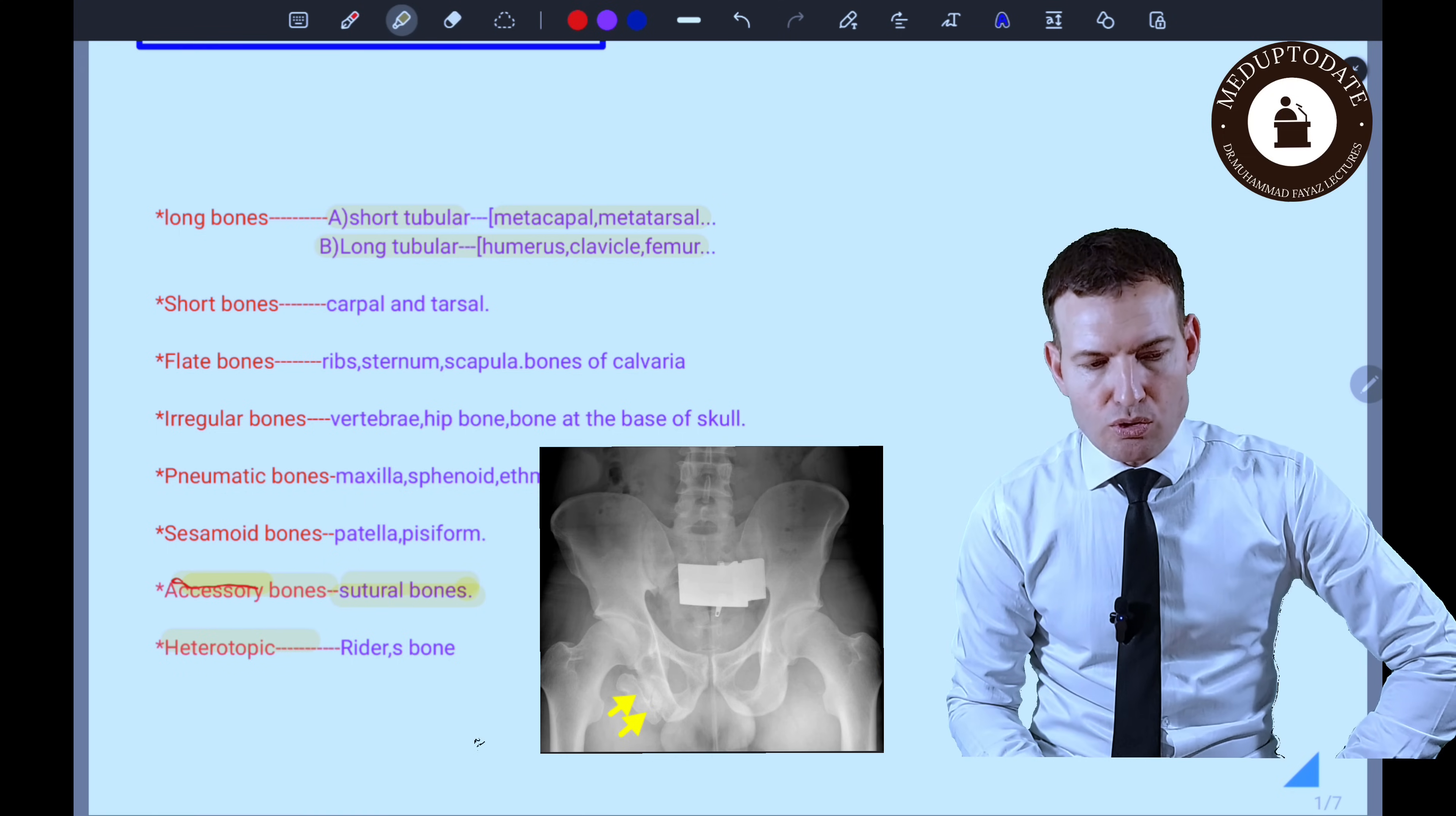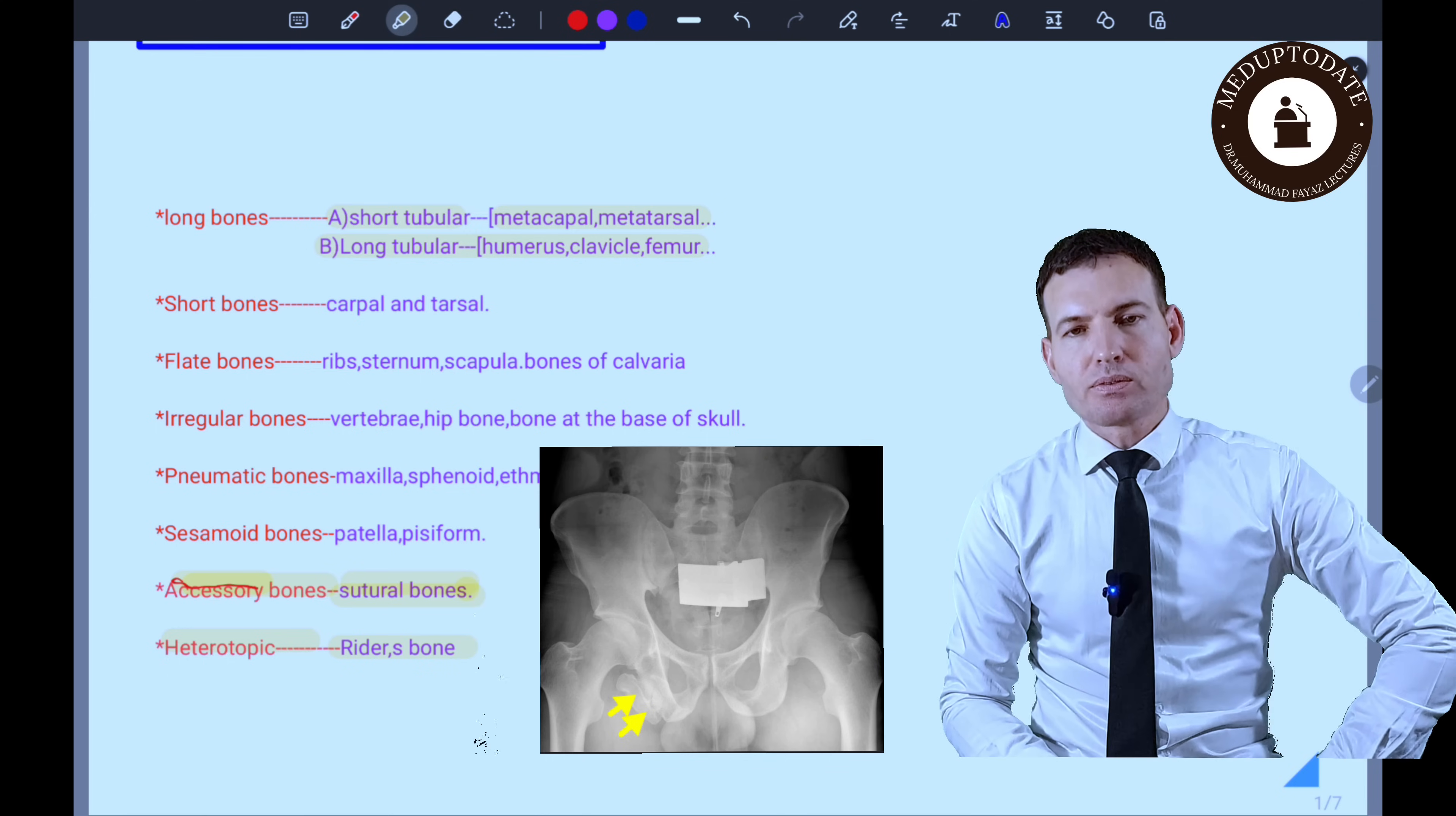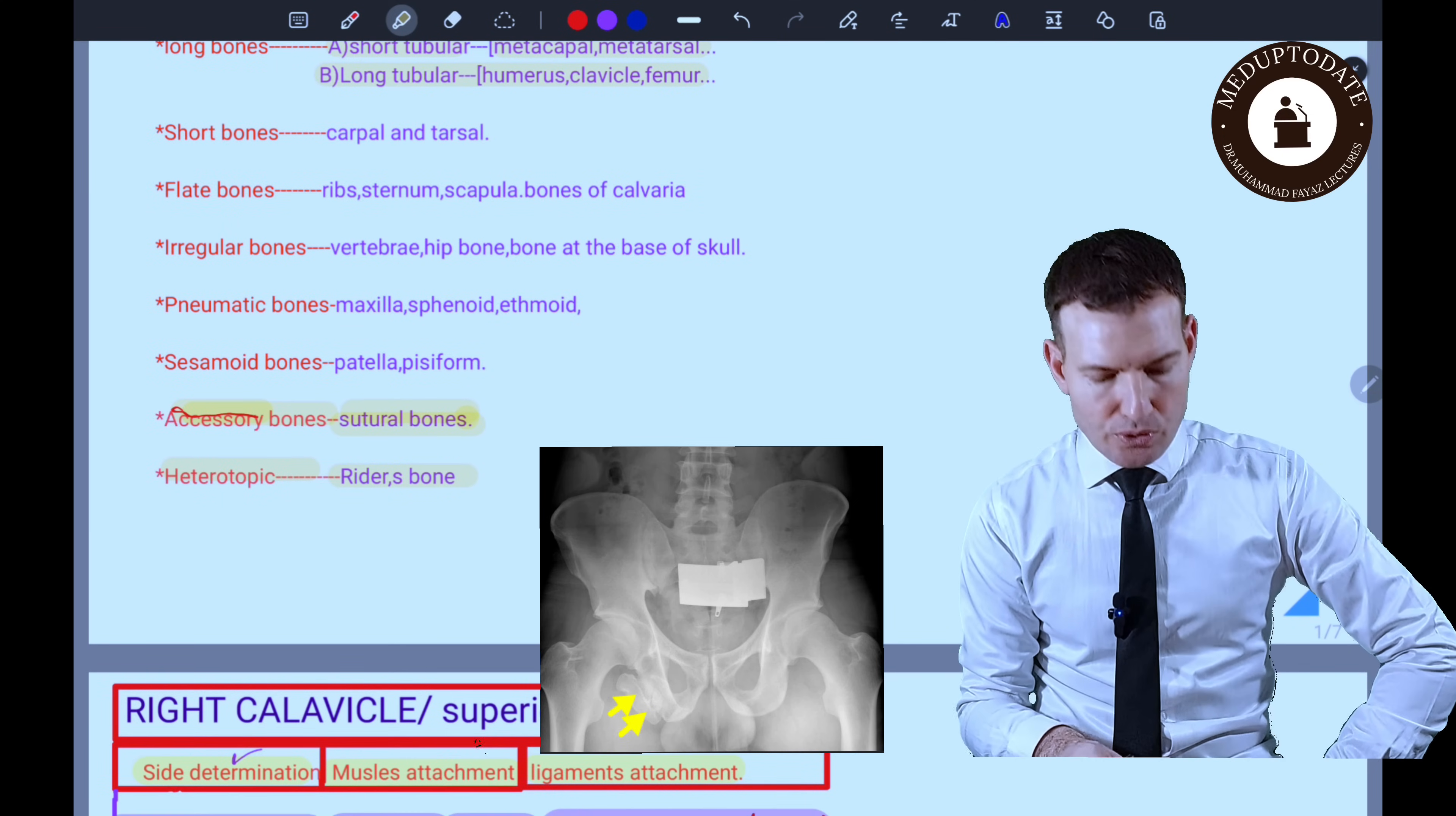Last one is heterotropic bone. It appears in non-skeletal tissue like muscle or adipose tissue, but in non-skeletal locations. It is also called ectopic bone. One example of this bone is rider's bone. Rider's bone appears in horse riders at the inner thigh, specifically in the adductor longus muscle. It requires no treatment as it is not harmful if it's not hurting.